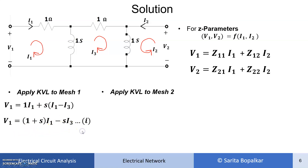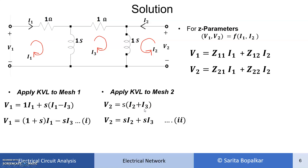Applying KVL to loop 2: V2 = S·(I2 + I3), because the current through this inductor is I2 plus I3 — both flow in the same direction — and the inductor value in transform domain is S. So V2 = S·(I2 + I3) is our second equation.